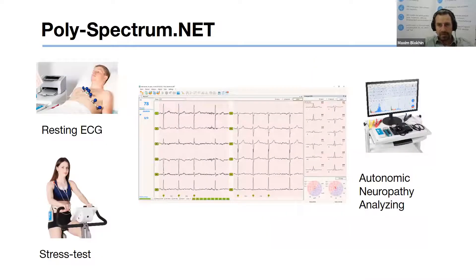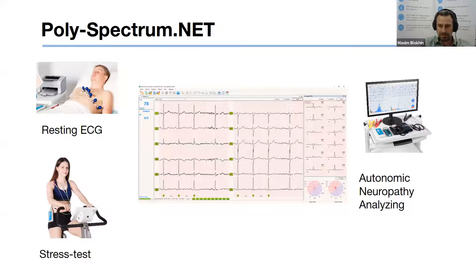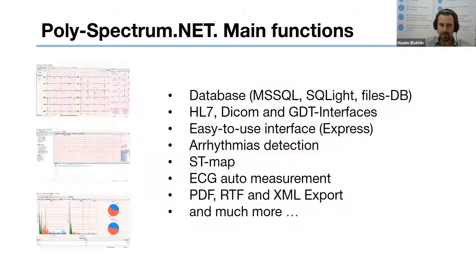An essential part of our digital ECG system is Polyspectrum Net software. It provides you all types of exams: resting ECG, stress testing, and autonomic neuropathy analysis. The software provides many functions.